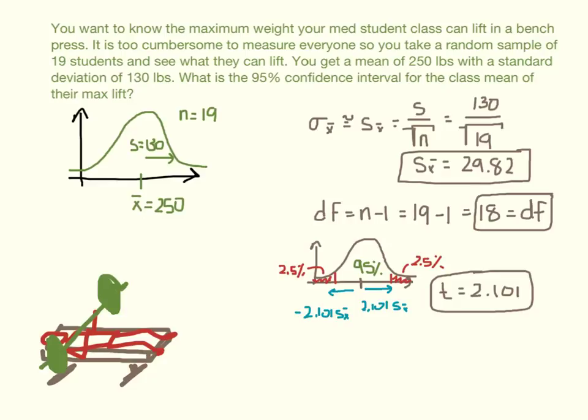Now we are ready to construct our confidence intervals. So we take our formula, remember, which was the mean, plus or minus the t-value times the standard error. The estimated standard error. And so if we fill in the formula, the values here, we know it's 250 plus or minus t, which we said was 2.101. And then the estimated standard error we said was 29.82.